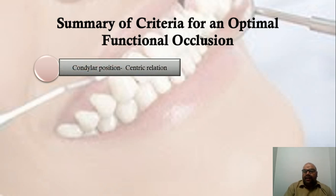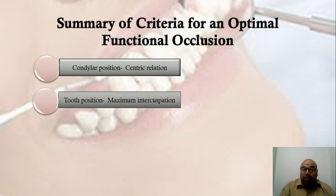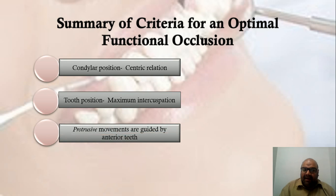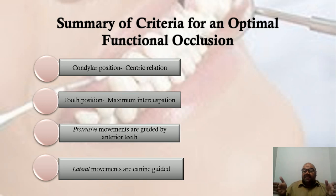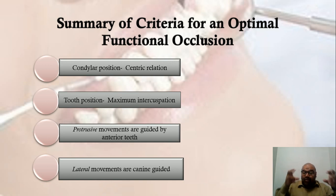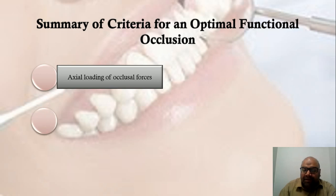Take-home message: when talking about condylar position, we refer to centric relation — a condyle-related position. When talking about tooth position, this is centric occlusion, maximum intercuspation, or centric occlusal position. Protrusive movements are guided by the anterior teeth — anterior guidance. Lateral or eccentric movements are guided by the canine — canine guidance. Posterior guidance is provided by the posterior slope of the articular eminence, which guides the condyle to move within the glenoid fossa.